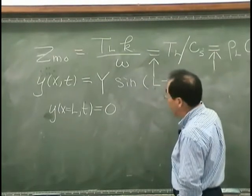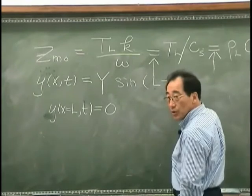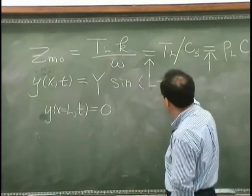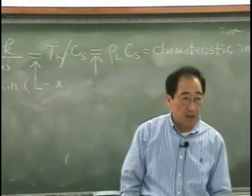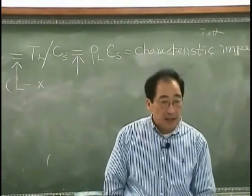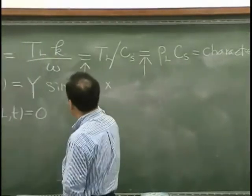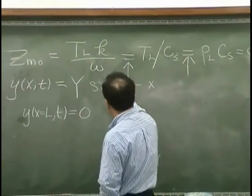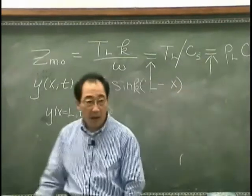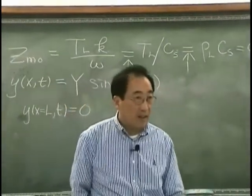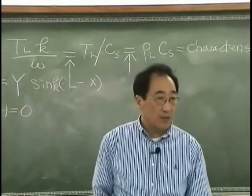And I want to measure the wave on x-axis from L. Well then, I should write like this: K(L minus x). Then that form satisfies the boundary condition.